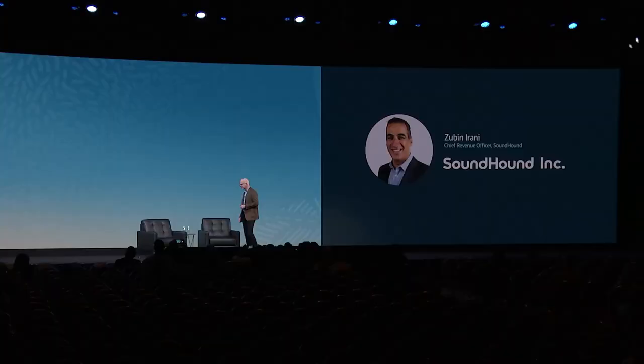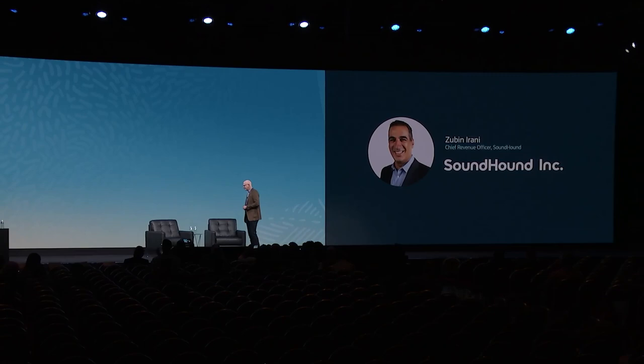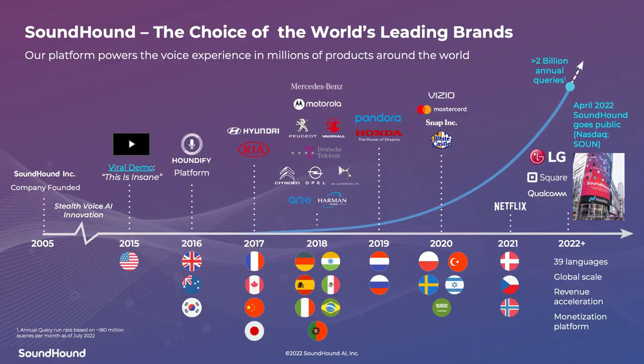I'd like to introduce one of our customers, SoundHound, and invite Zubin Arani, their Chief Revenue Officer, to come out and talk about their experiences with OCI. Tell us about SoundHound and your business. SoundHound is the only independent voice AI company helping businesses across multiple industries integrate conversational AI into their products and services. We were founded in 2005 — actually founded at Stanford in a dorm room. Over the last 17 years we became a public company delivering our technology in 38 languages to some of the biggest brands like Mercedes, Pandora, Snapchat, and Vizio.